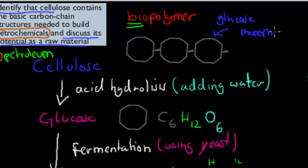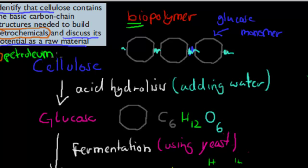Now, what happens if we add water? By adding water to cellulose, what will happen is we will break those bonds in between. These bonds will be broken by adding water, and we're left with the individual glucose molecules. The first step is to break down cellulose into glucose. Glucose has a basic carbon structure needed to build petrochemicals because it has six carbons in its chain.